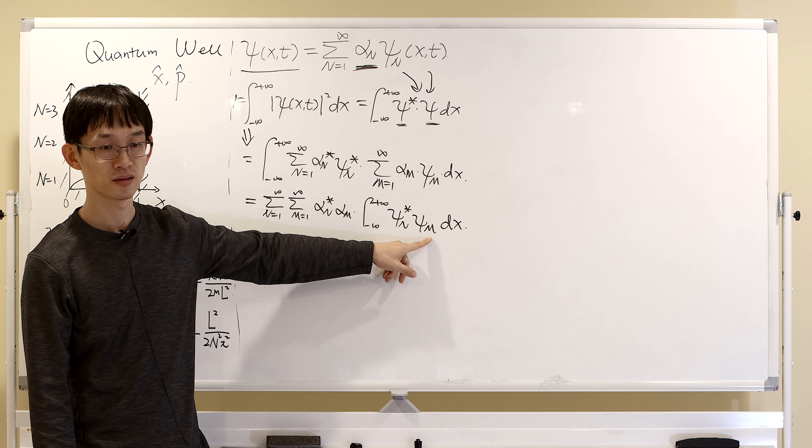On the left, the two terms destructively interfere — the value is smaller. On the right, they constructively interfere — the value is larger. So at time t=0, the expected position should be less than L/2, on the left-hand side.